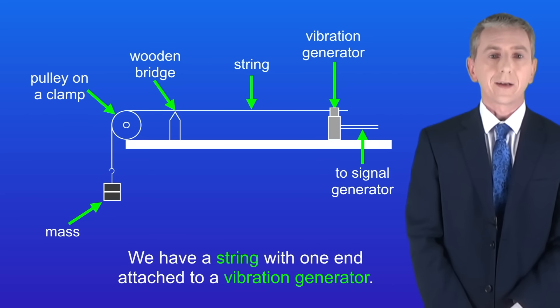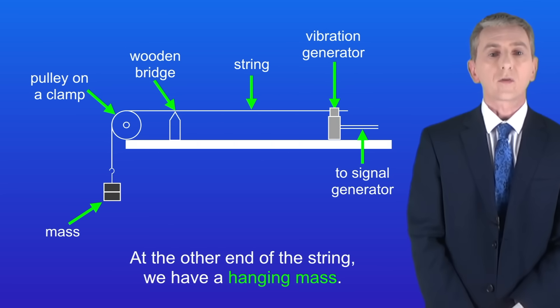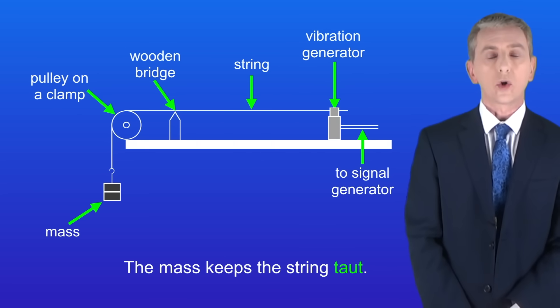We've got a string with one end attached to a vibration generator. At the other end of the string we've got a hanging mass and the mass keeps the string taut.